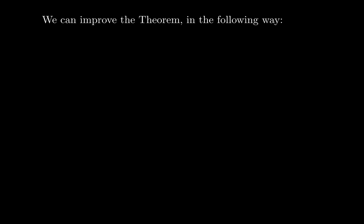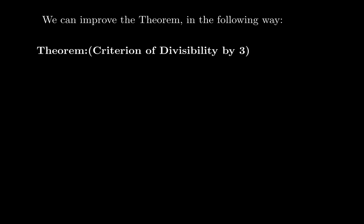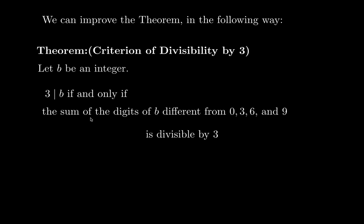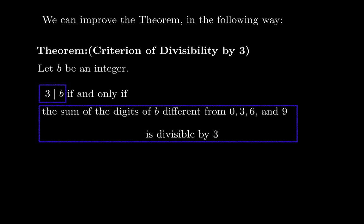We can improve the theorem a little more. You don't actually have to add all the digits. The improved criterion is: 3 divides B if and only if the sum of the digits of B that are different from 0, 3, 6, and 9 is divisible by 3. What this means is you can ignore the digits 0, 3, 6, and 9 — you don't have to add those. You only add the remaining digits, which makes the process faster when your number contains those digits.